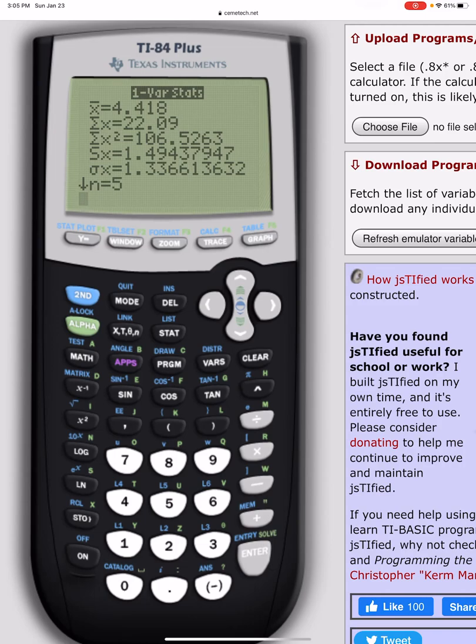And lo and behold, it tells me my x-bar, which tells me my sample mean. It tells me the sum of x and sum of x squared, which I don't even need. It tells me both Sx and Sigma X, so it tells me the sample standard deviation and the population standard deviation. So depending on the problem, you have to know which one to use in the given answer.